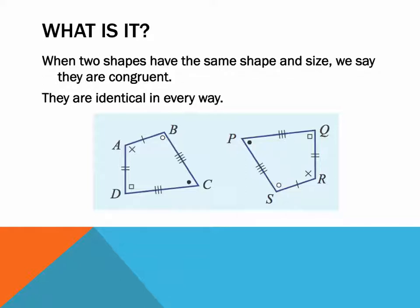Have a look at these two shapes. Even though they have different letters, side AB and its corresponding side are equal. The angles and sides correspond respectively. These two are identical in every single way except the fact that the second one has just been flipped upside down. We don't say 'identical' anymore — we call it congruent.